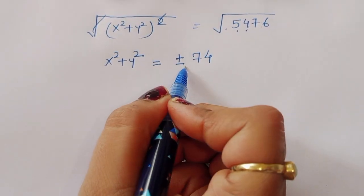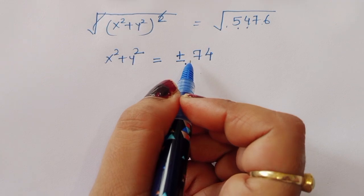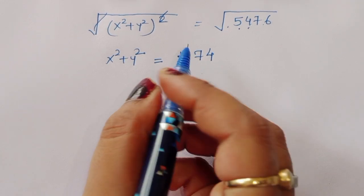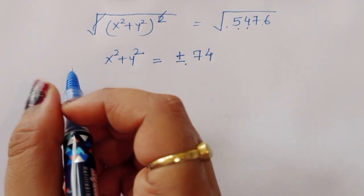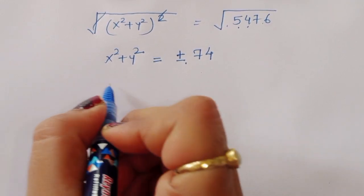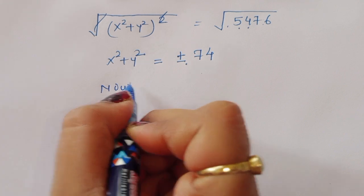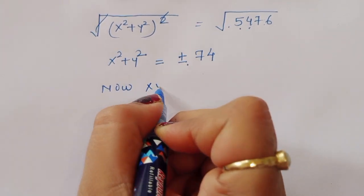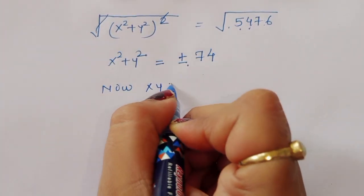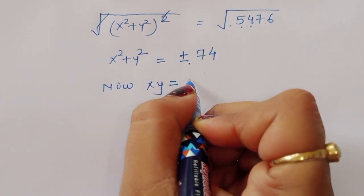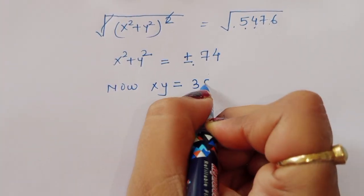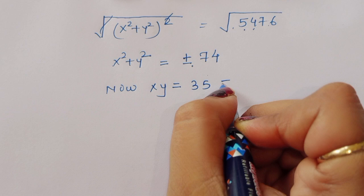Now x squared plus y squared equals plus or minus 74. We also know that xy equals 35, which is given in the question.